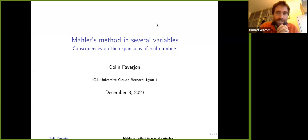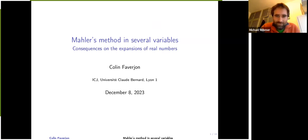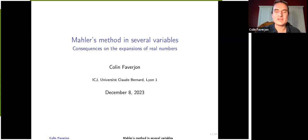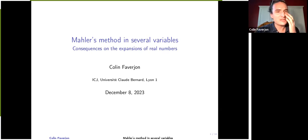Welcome to the last Corkin seminar of this year. Our speaker is Colin Parachon, and he'll talk about Mahler's method in several variables. Thank you very much for inviting me today. My goal in this talk is to introduce this method of transcendence, which is called Mahler's method in several variables. We're going to see which kind of results we can obtain with this method, and talk about one consequence of these results, about the expansions of real numbers in integer bases.